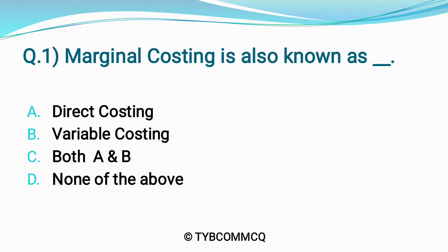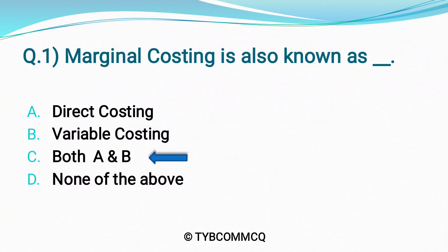Question No. 1: Marginal costing is also known as ___. Option A: Direct Costing. Option B: Variable Costing. Option C: Both A & B. Option D: None of the above. The correct option is Option C — Both A & B.